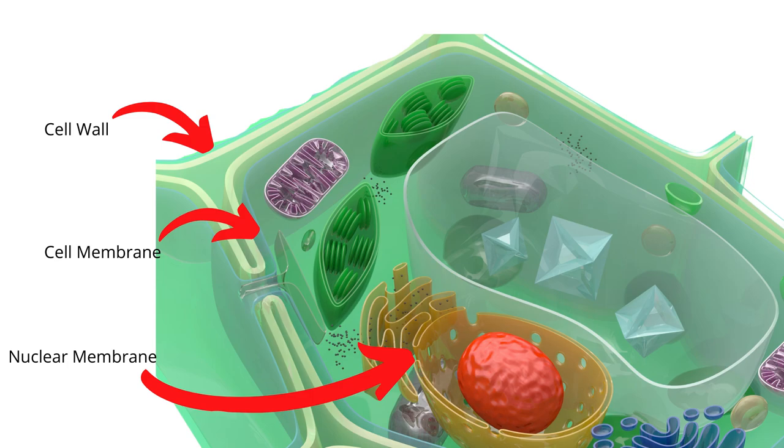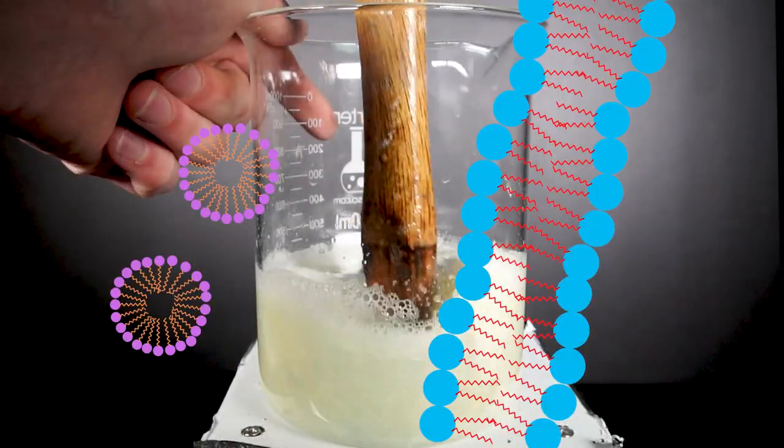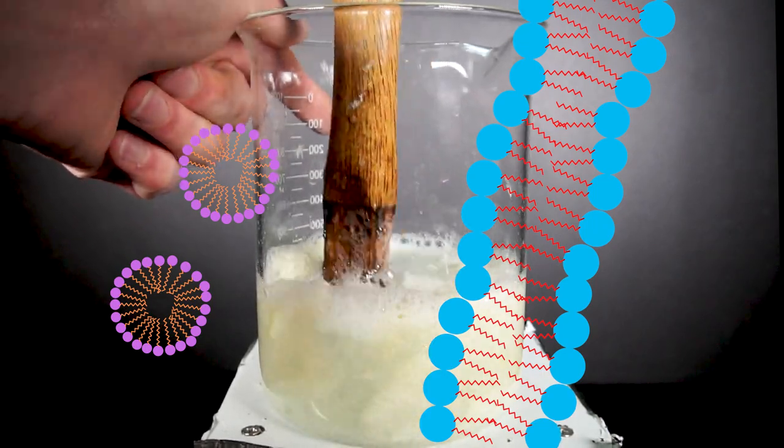As we crush the lemon, we are destroying the cell walls, allowing the cell membranes to be exposed. Cell membranes are made up of phospholipids, and these lipids sit in a very uniform tight alignment.